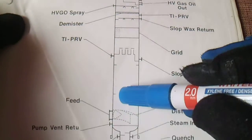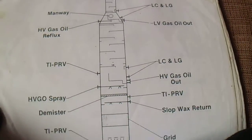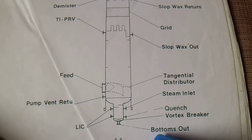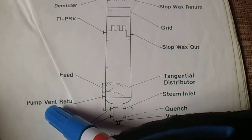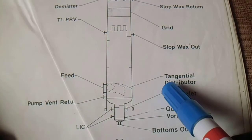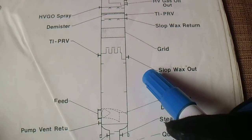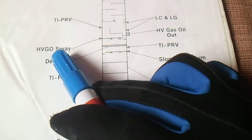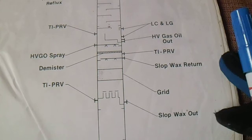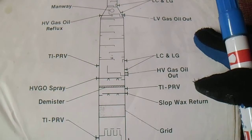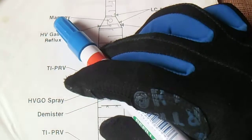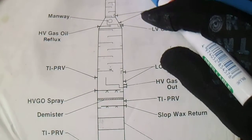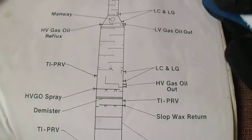Next is the vacuum column. This vacuum column has different levels. From the bottom side, we have LC on the nozzle, bottom out, quench, vortex breaker, pump return feed, and a tangential distributor. We also have slop wax out, PRB grid, and a demister spray. The column has different levels with manways, gas oil LB, gas oil, and vapor out from the top.